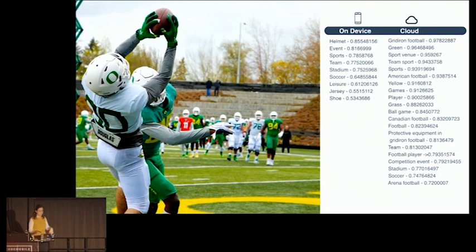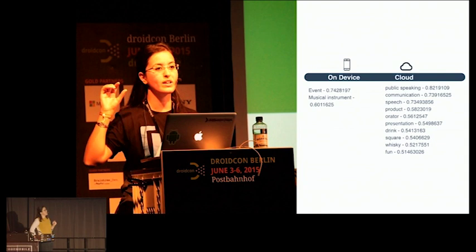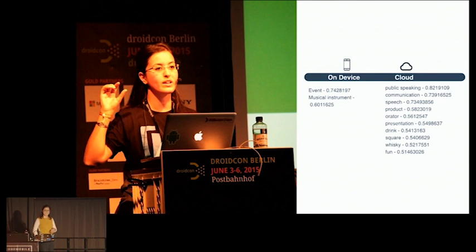Using a personal photo from a previous conference as an example: on-device detected it as an event with a musical instrument, while cloud detected public speaking, communication, speech, product presentation — and even said there was whiskey, which was not actually in the photo.